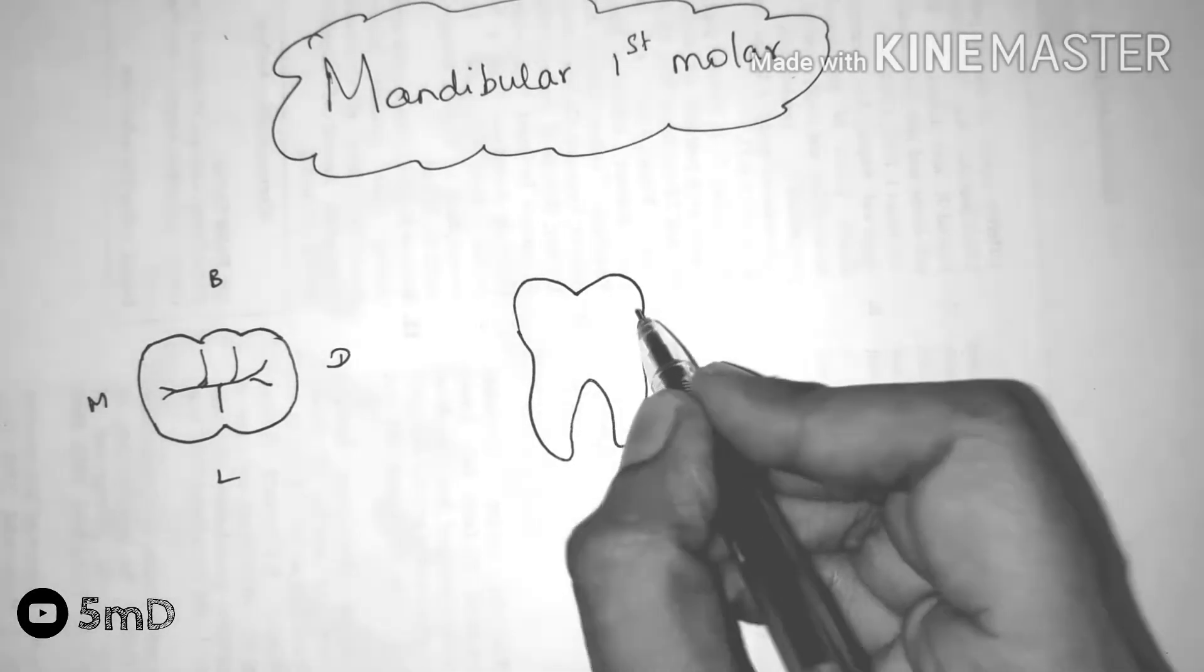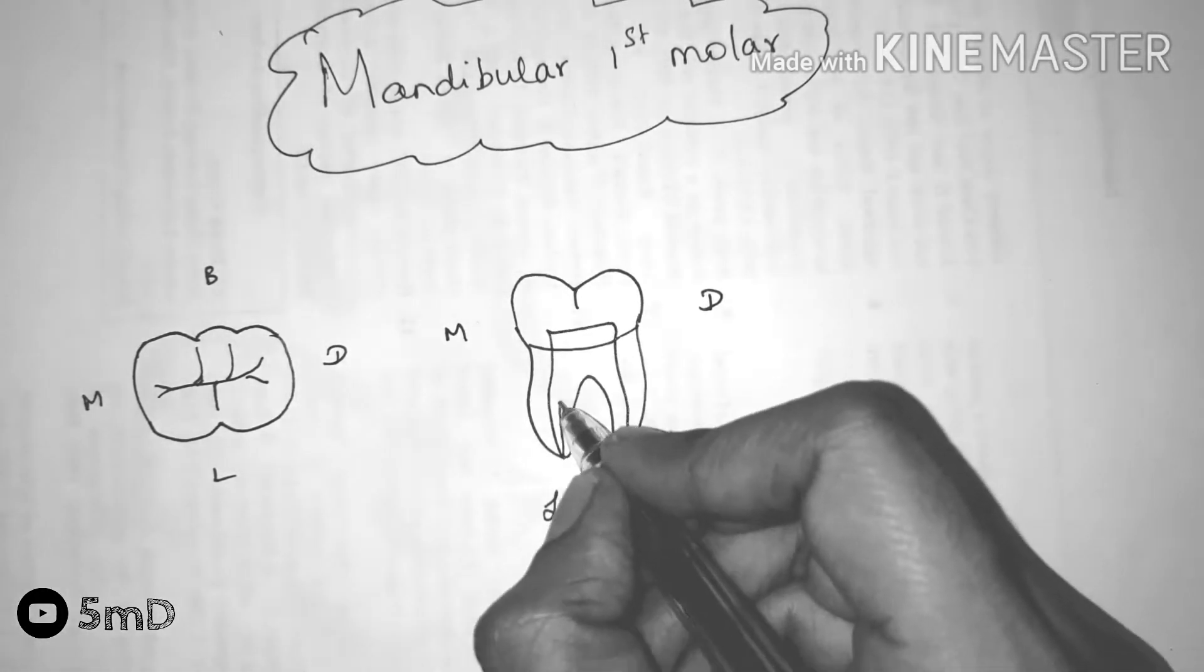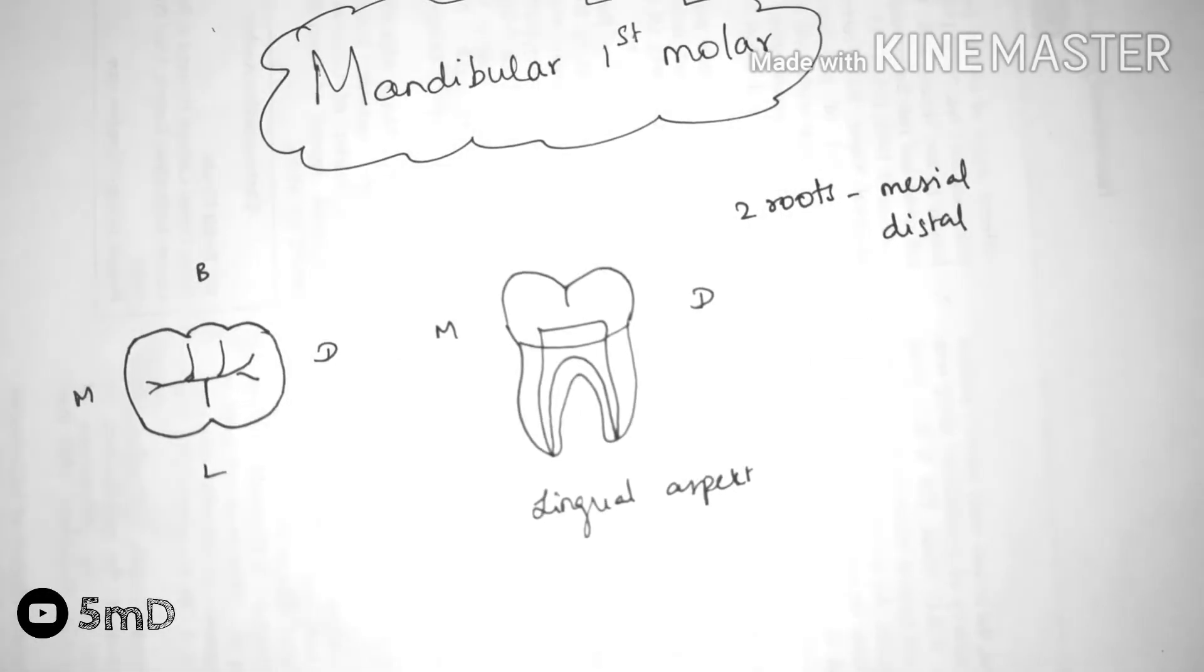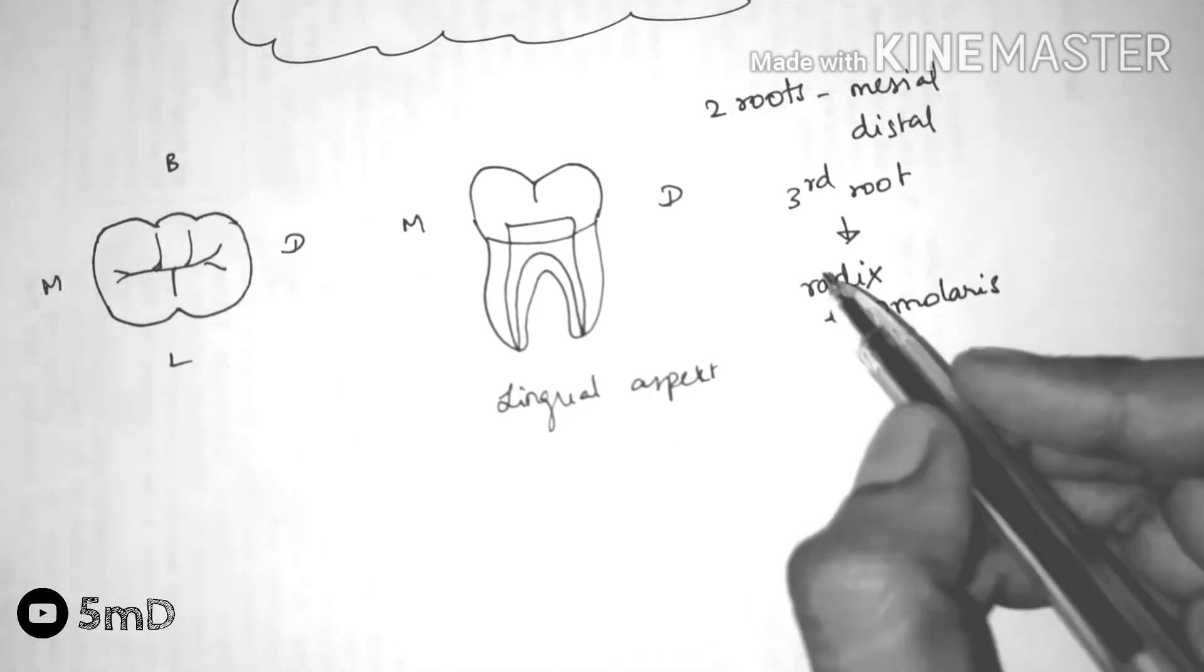In the lingual aspect, we could locate the mesial and the distal roots. There are 2 roots, mesial and distal, and the 3rd root can be present in some teeth known as the radix entomolaris. There are 3 canals,